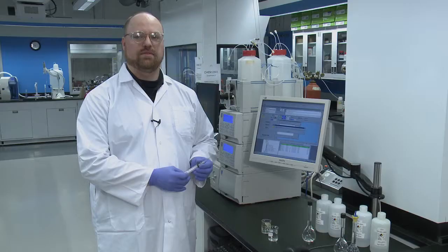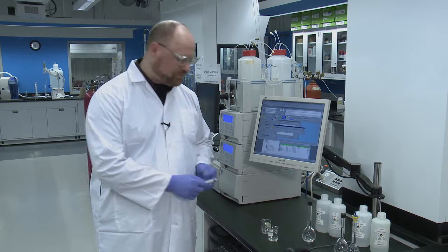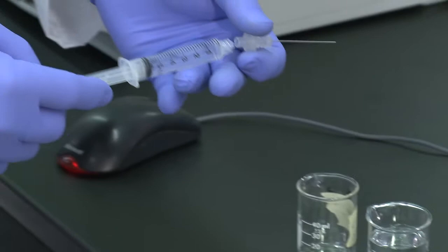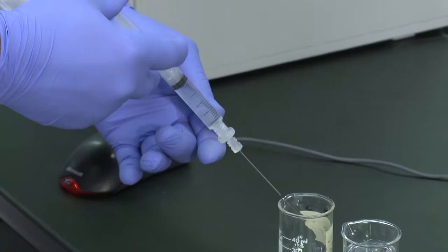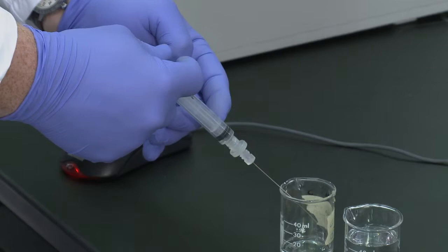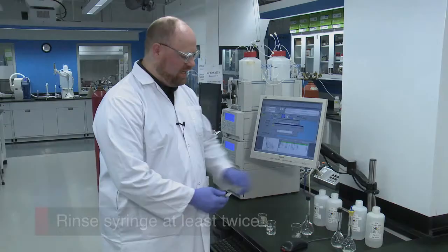This syringe has a filter on it that needs to be removed when you're filling the syringe. So you take the filter off, you're going to drop liquid, in this case we're just using water to rinse the syringe, put the filter back on, and expel it to waste through the filter. We're using deionized water for rinsing the syringe. It's going to take a little bit of effort to do because the filter does restrict the flow. You're going to want to do this a couple of three times.